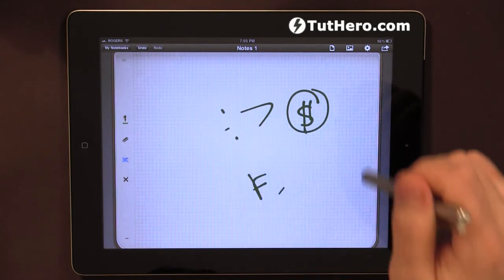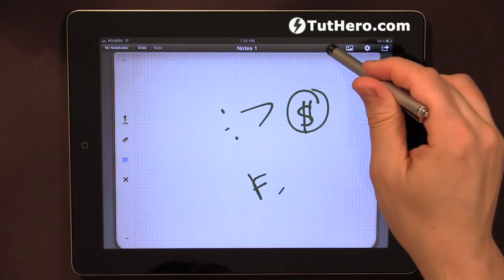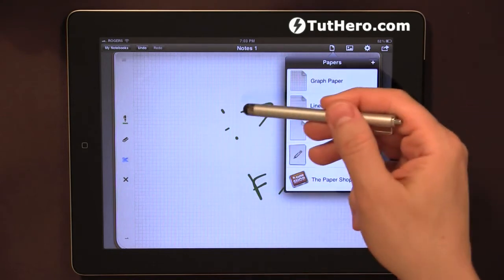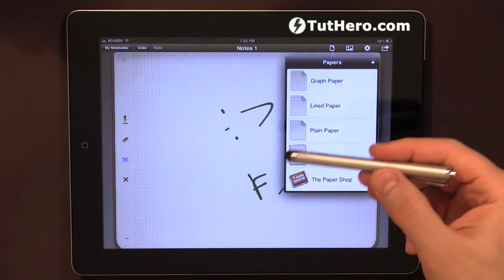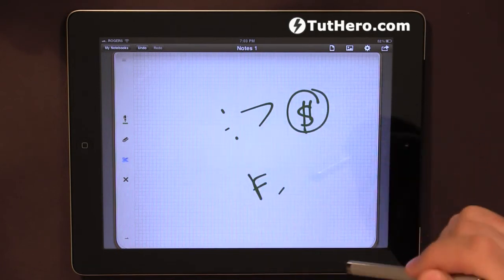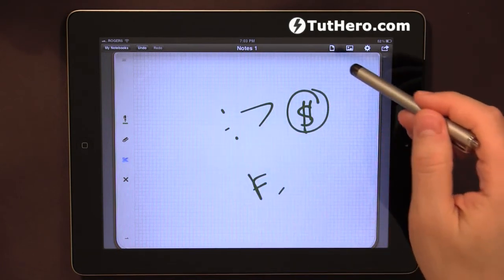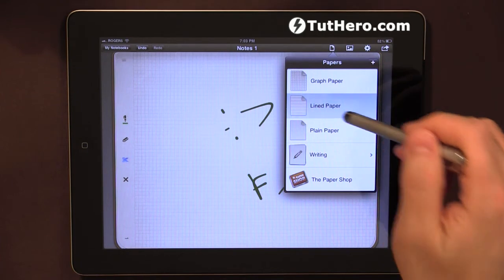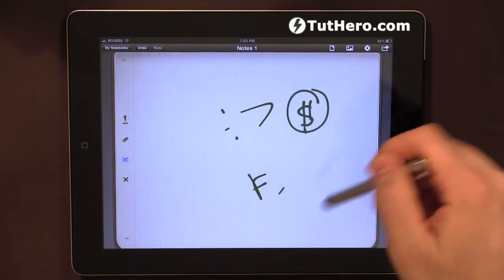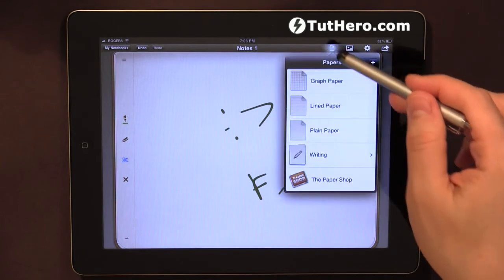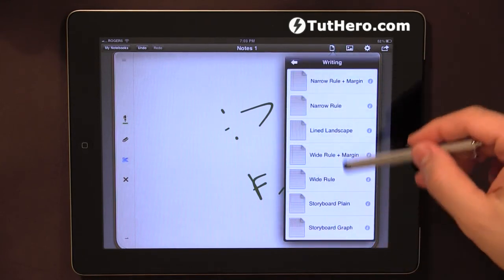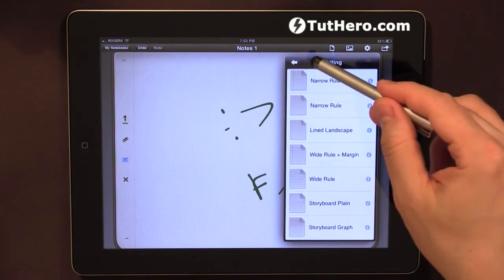Now let's have a look under the paper icon. We can change the background to different types of papers. We have graph paper which is pre-loaded, lined paper, plain paper without any background, and a bunch of other types that come with the app.